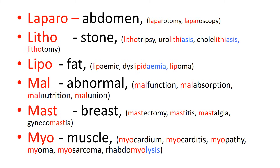'Mal' is a very common prefix meaning abnormal. Malfunction means the function is not normal. Malabsorption means absorption is not normal, very often referring to absorption of nutrients from the gastrointestinal tract. Malnutrition means abnormal nutrition — either too little of a nutrient or too much, such as excess fats and carbohydrates leading to obesity. Malunion is a term used in orthopaedics where bones don't heal together properly, healing in an abnormal position.